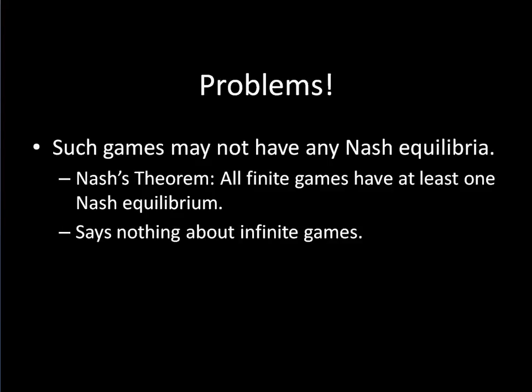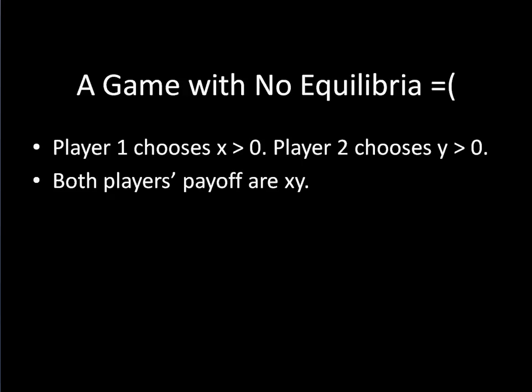In this lecture, I want to give you a specific example of a game that doesn't have any equilibria before we go. And that example looks like this. Here's the game. Player one chooses some number X greater than zero, strictly greater than zero. It cannot be zero. And player two chooses Y greater than zero. Again, any number that's strictly greater than zero. The payoffs that the players get are the product of those two numbers, X times Y.